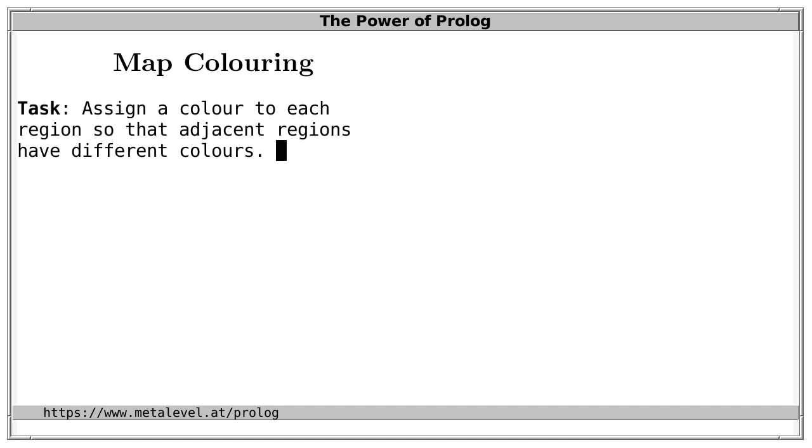Let's use Prolog for map coloring. The task is to assign one color to each region of a map, so that adjacent regions have different colors.